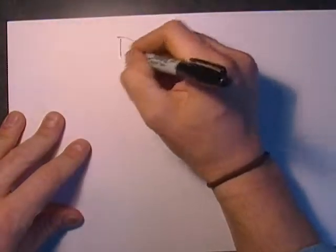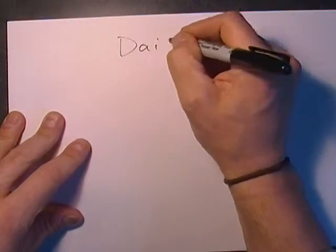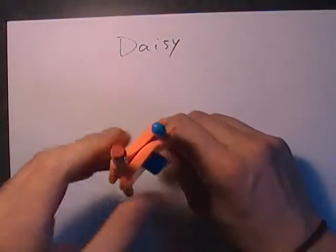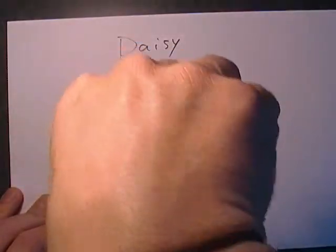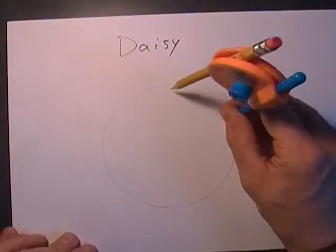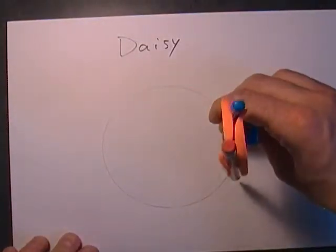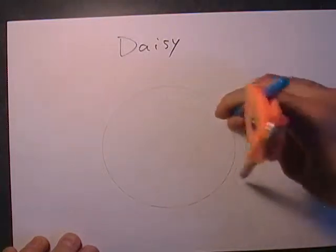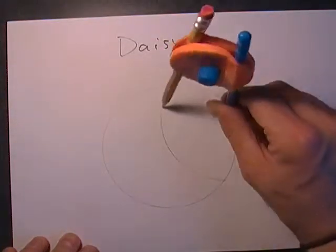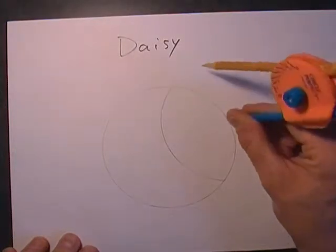Now we do the daisy. The daisy is easier than the Star of David. We start off the same way — draw a circle. But now, instead of finding our six points and making the two arcs, we draw the circle that goes inside.